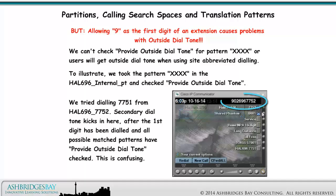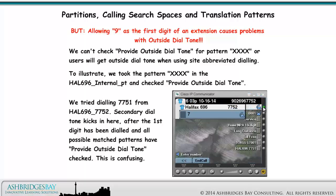We tried dialing 7751 from Halifax 696 7752. Secondary dial tone kicks in here, after the first digit has been dialed and all possible match patterns have Provide Outside Dial Tone checked. This is confusing.